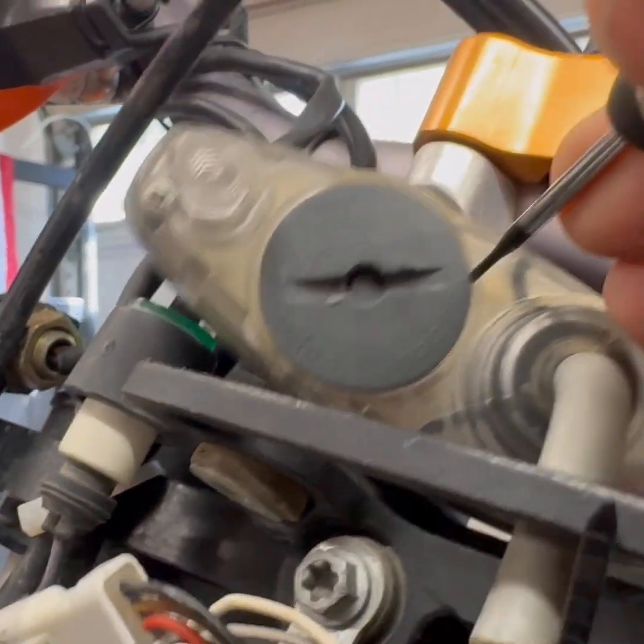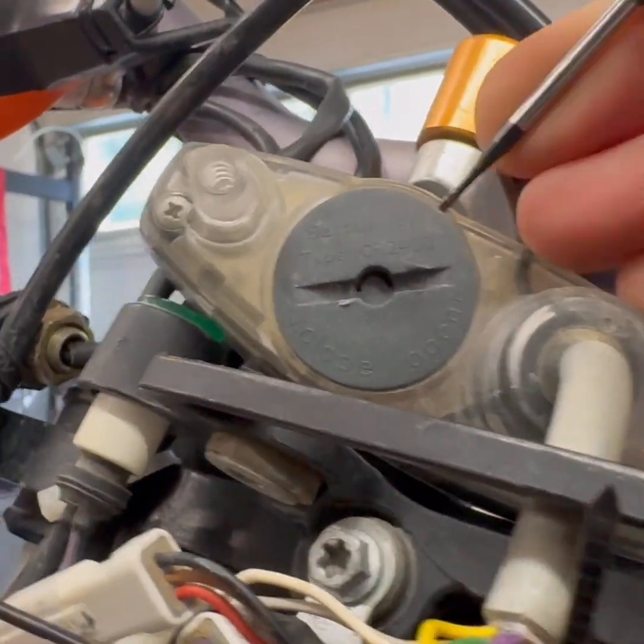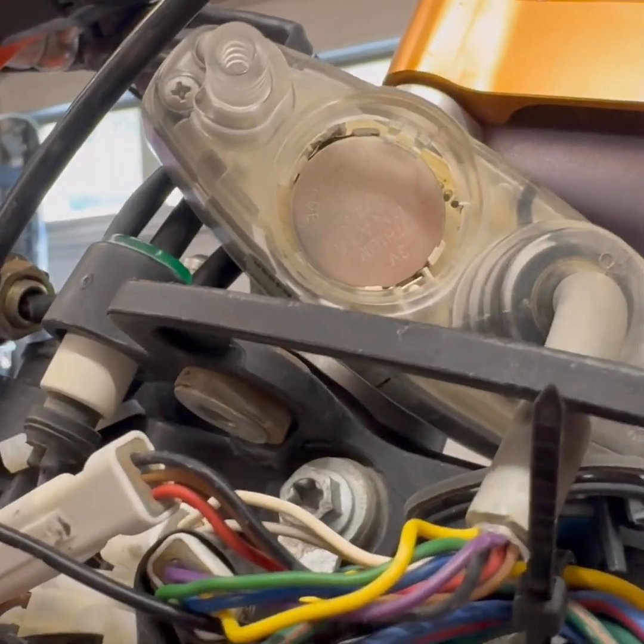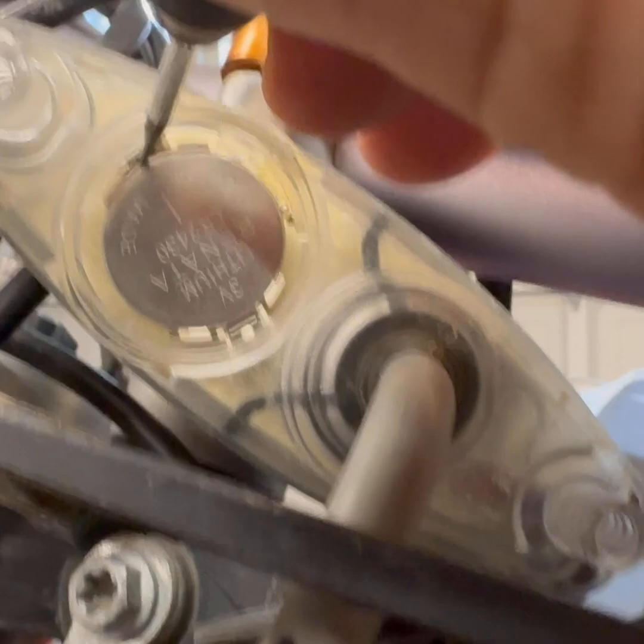Once you've got it rotated about a quarter turn use a smaller screwdriver to try to pry it off from the side like that. Next your battery's inside.